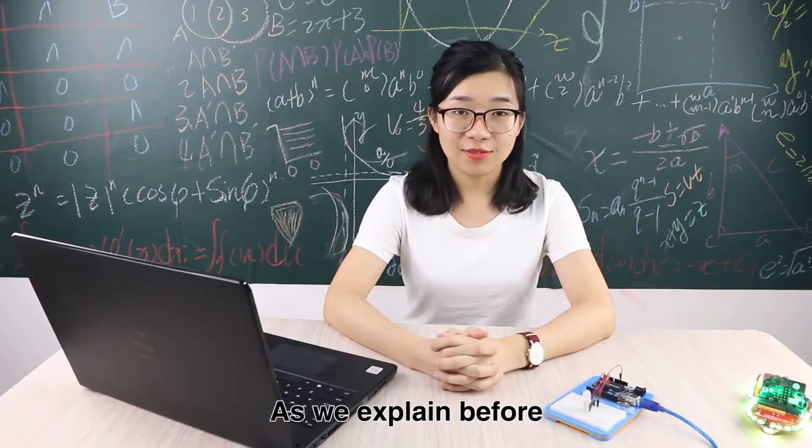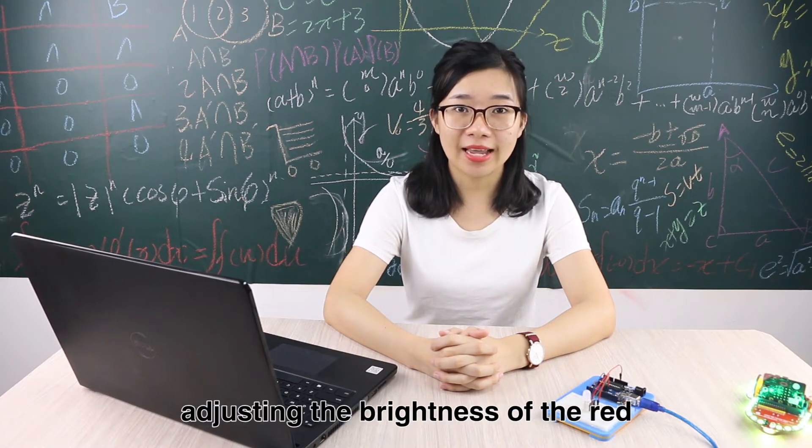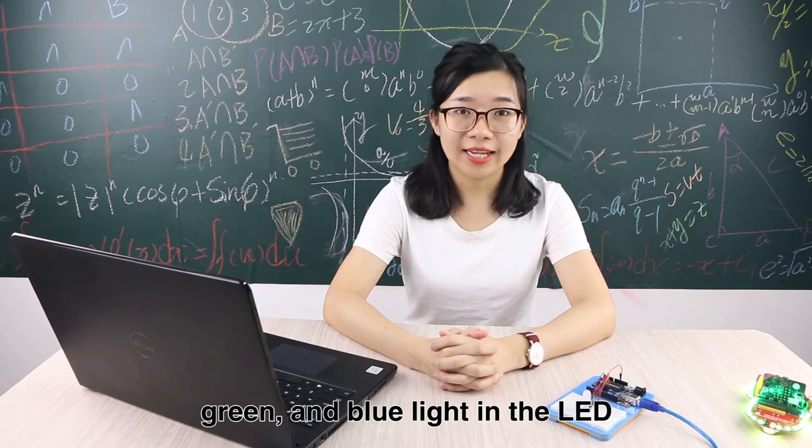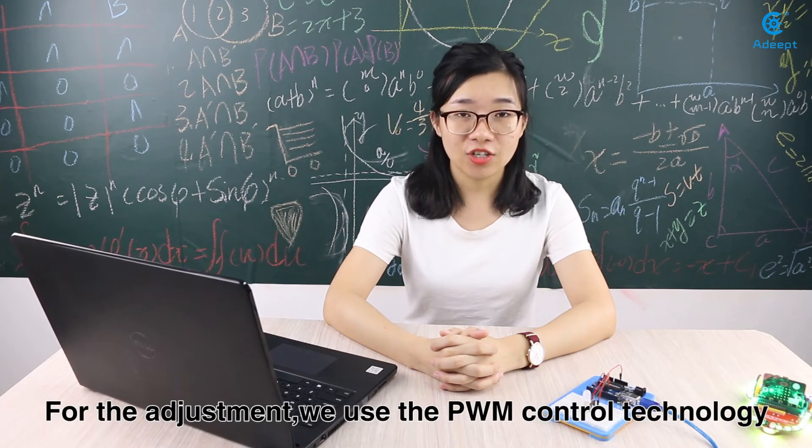As we explained before, any color can be obtained by adjusting the brightness of the red, green, and blue light in the LED. For the adjustment, we use the PWM control technology.